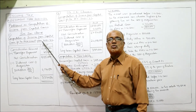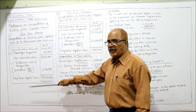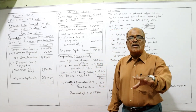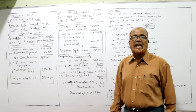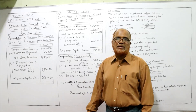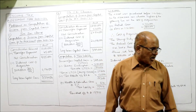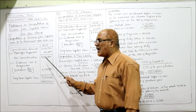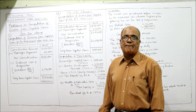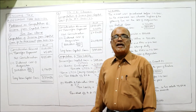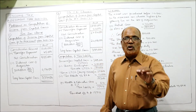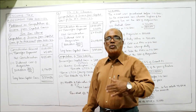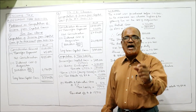Sri Sai Chand — computation of income from capital gain for assessment year 21-22. Consideration received (sale price) is rupees 10 lakh. From this we deduct selling expenses of 45,000, giving net consideration of rupees 9,55,000. From net consideration we deduct indexed cost of acquisition.